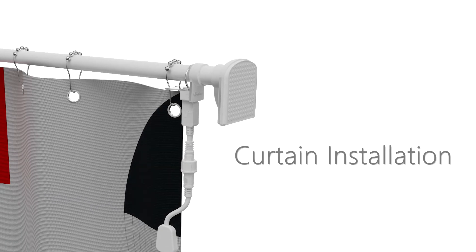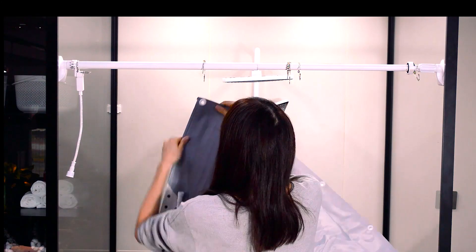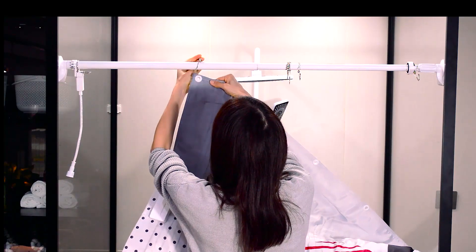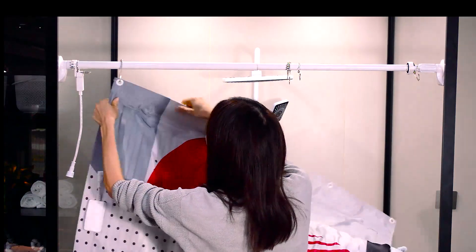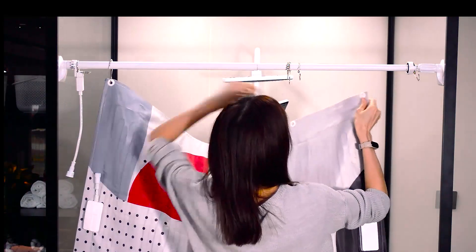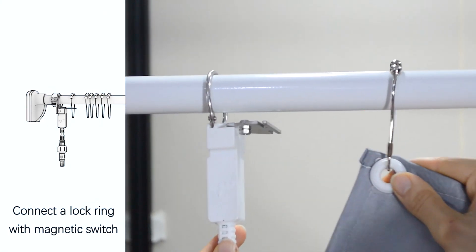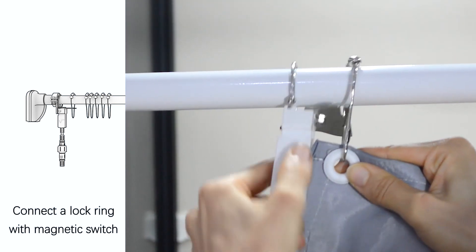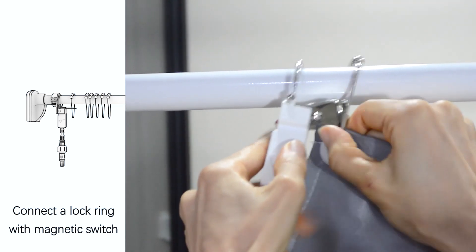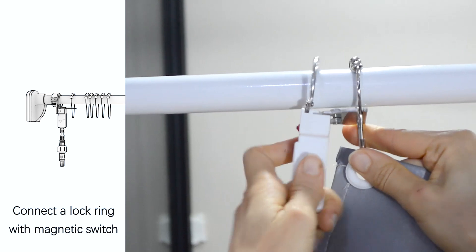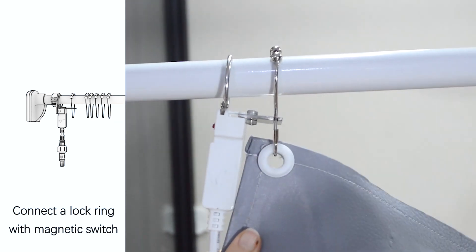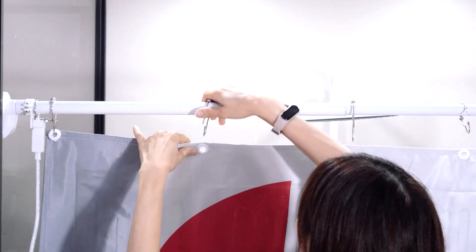Curtain Installation. Hang two ends of the curtain to related lock rings. Connect a lock ring with magnetic switch. In turn, close the lock rings.